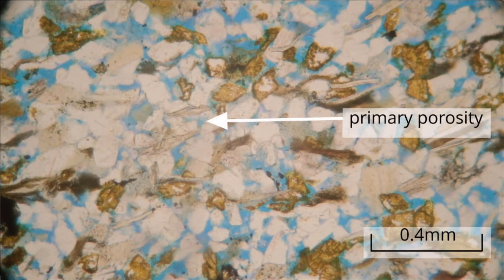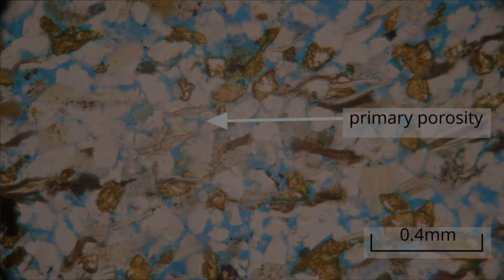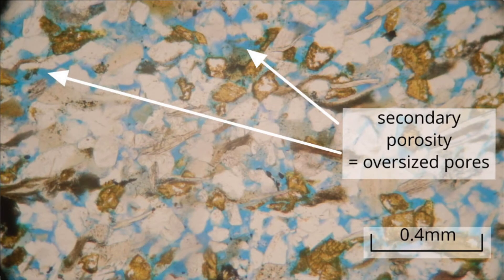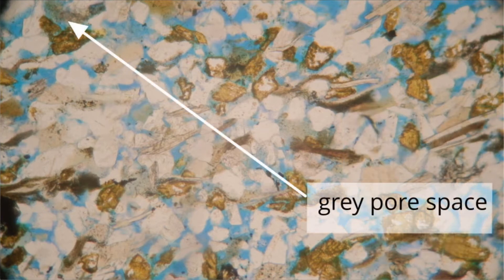In plain polarised light, the blue staining allows you to see the porosity of the rock. Note that the primary porosity has largely been preserved, indicating that there was either little or no cementation. Alternatively, any pore-filling cements that originally formed may have been subsequently lost. Oversized pores indicate a secondary porosity, caused by dissolution of feldspar grains. Some of the grey coloured pore spaces show deposition of clay minerals, likely an alteration product from the dissolution of feldspar.